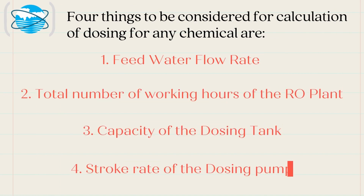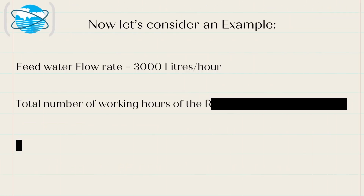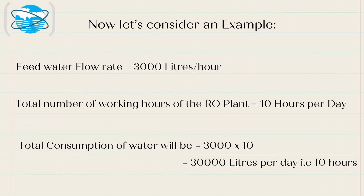Four things to be considered for calculation of dosing for any chemical are: 1. Feed water flow rate. 2. Total number of working hours of the RO plant. 3. Capacity of the dosing tank. 4. Stroke rate of the dosing pump. Now let's consider an example.